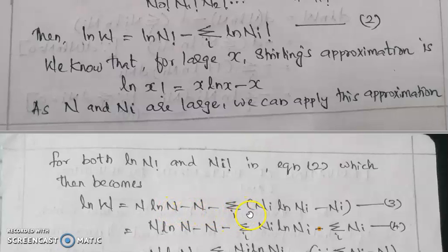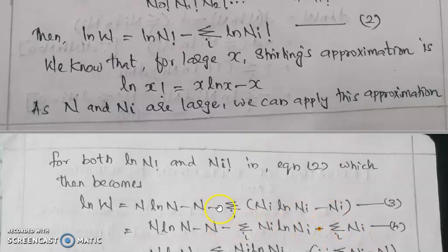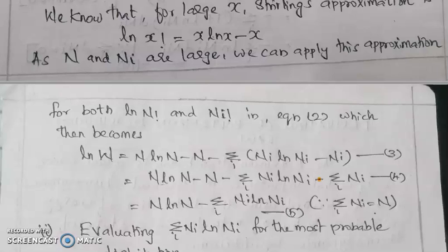Applying the Stirling approximation, equation 2 becomes: ln W equals N ln N minus N minus sigma i (Ni ln Ni minus Ni), which simplifies to N ln N minus sigma i Ni ln Ni. That is equation 5.